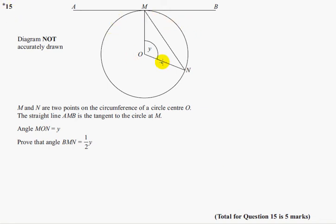Question 15. Here's a diagram. The diagram is not drawn accurately. M and N are two points on the circumference of the circle centre O. The straight line AMB is a tangent to the circle at M. Angle MON equals Y. Prove that the angle BMN equals half Y.